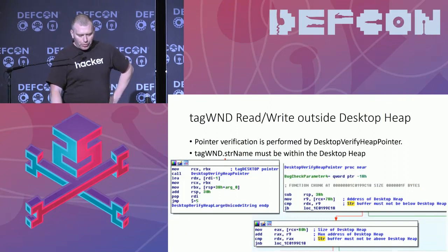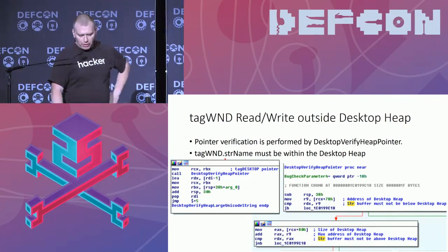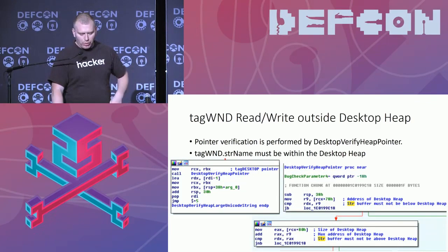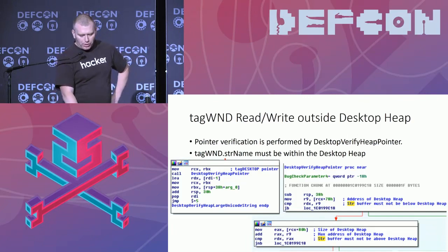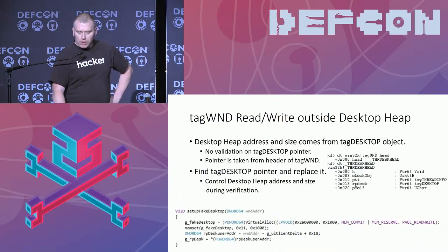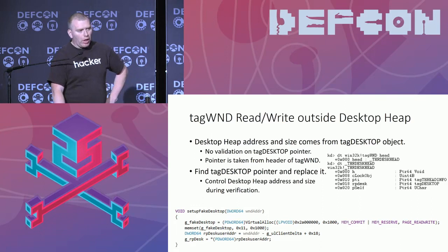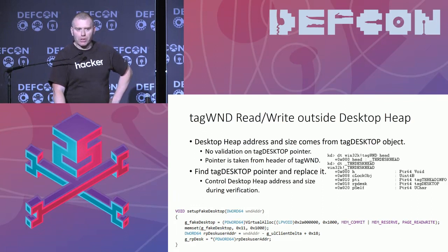Looking at the window primitive — we're not allowed to write outside the desktop heap. This is due to a new function called DesktopVerifyHeapPointer. Every time we try to use the string name pointer by either reading or writing with it, it has to be validated through this function. It takes the base address of the desktop heap and the size of it and checks that we're inside these two. But what we notice is that the pointer comes from an object called the tagDesktop object, and there's actually no validation performed on that object pointer. Which means if we can find this pointer and replace it, we control the desktop verification addresses.